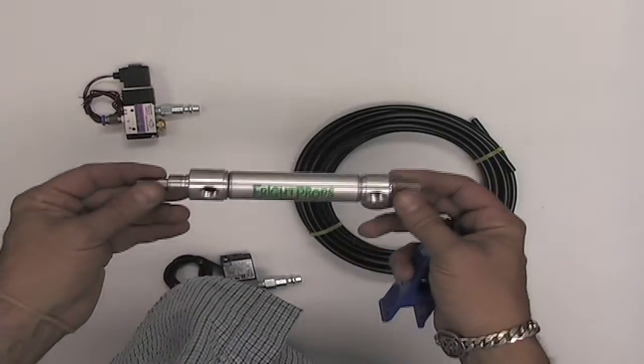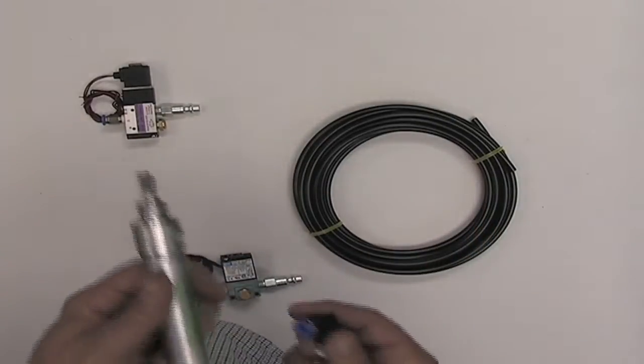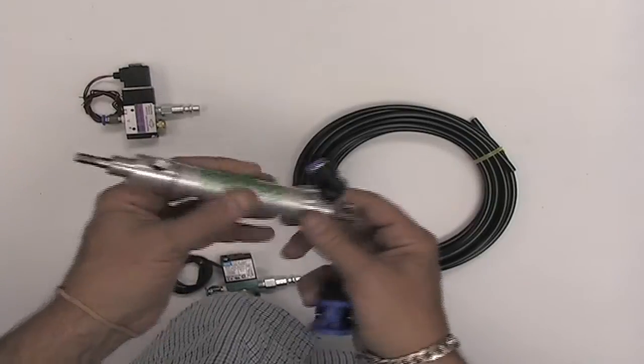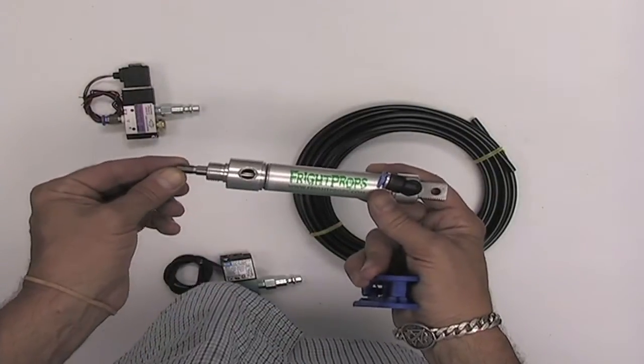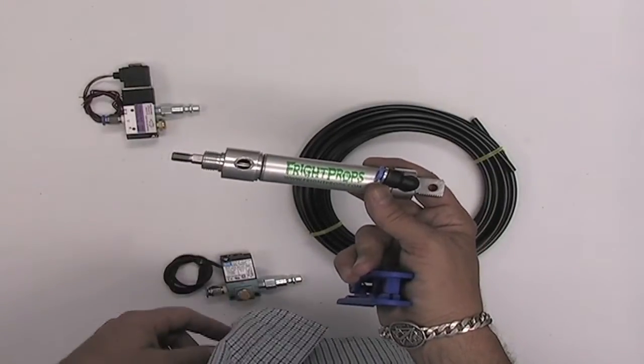You can also use a three-way solenoid with a double-acting cylinder. In this case, you're just going to push air to one side of the cylinder, say the bottom, and air will push it out, and the weight of your object is responsible for pushing it back in.